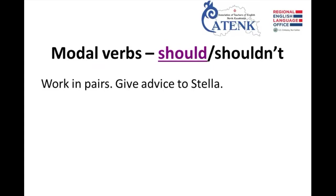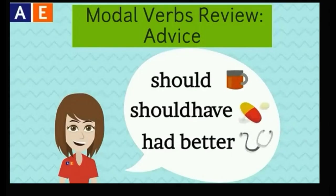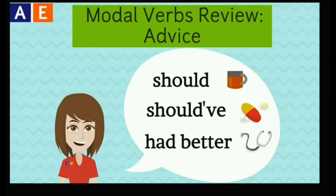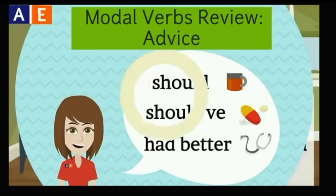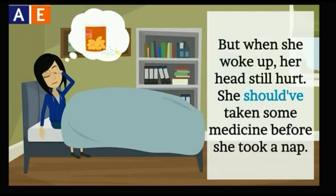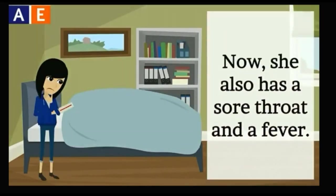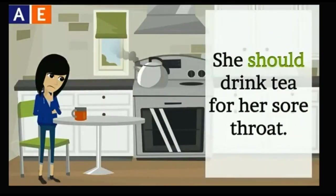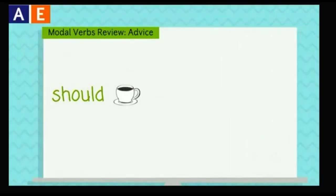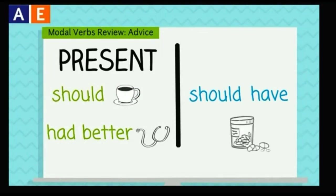Now you can see modal verbs 'should' and 'shouldn't.' Please watch the video. You should listen for 'should,' 'should have,' and 'had better' in this story and try to notice which modal is in the past and which modals are in the present. Earlier today, Sarah had a headache so she took a nap, but when she woke up her head still hurt. She should have taken some medicine before she took a nap. Now she also has a sore throat and a fever. She should drink tea for her sore throat, and because she has a fever she'd better go to the doctor soon, otherwise her health might get worse. We use 'should' and 'had better' to give advice in the present, and we use 'should have' to give advice in the past.